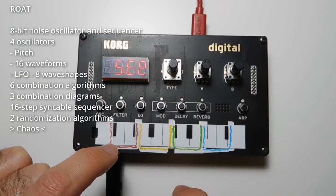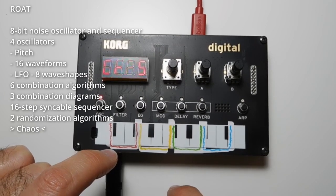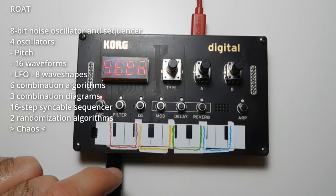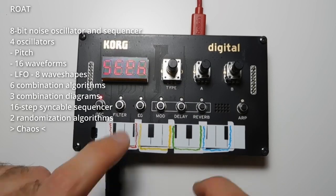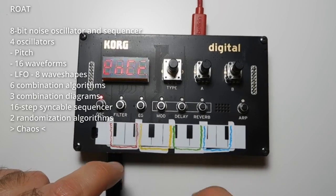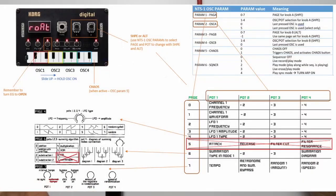The Rode oscillator for Korg NTS-1 is totally free and you can download it from the link in the description below, where you can also find detailed instructions on how to use it.